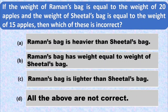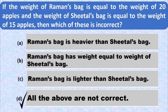Option B says Raman's bag has weight equal to the weight of Sheetal's bag — this statement is incorrect. Option C says Raman's bag is lighter than Sheetal's bag — this is also incorrect. Option D says all the above are incorrect. We have seen option A is correct but options B and C both are incorrect, so all the above are not correct. Option D is the required answer and we put the tick mark at option D.